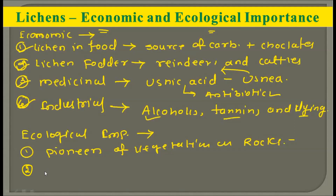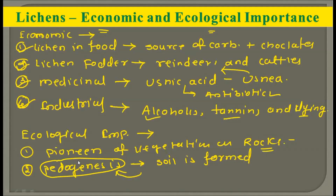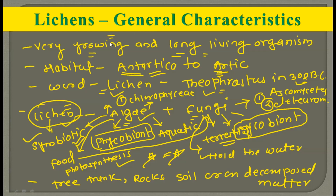The second ecological importance is that lichens carry out the very important function of pedogenesis. Pedogenesis is the process in which soil is formed — the formation of soil is called pedogenesis. Lichens do the very important function of forming soil on rocks, and once soil is formed, other small plants can come, followed by bigger plants, and that is how lichens help convert bare rocks into forest areas. So the two ecological importances are: lichens are pioneers in vegetation on rocks, and they help in the formation of soil through pedogenesis.